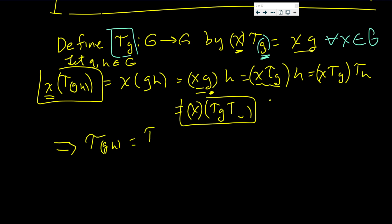So this is equal to this and that implies τ_gh is in fact, let's write that correctly, that is τ_gh is equal to τ_g times τ_h.